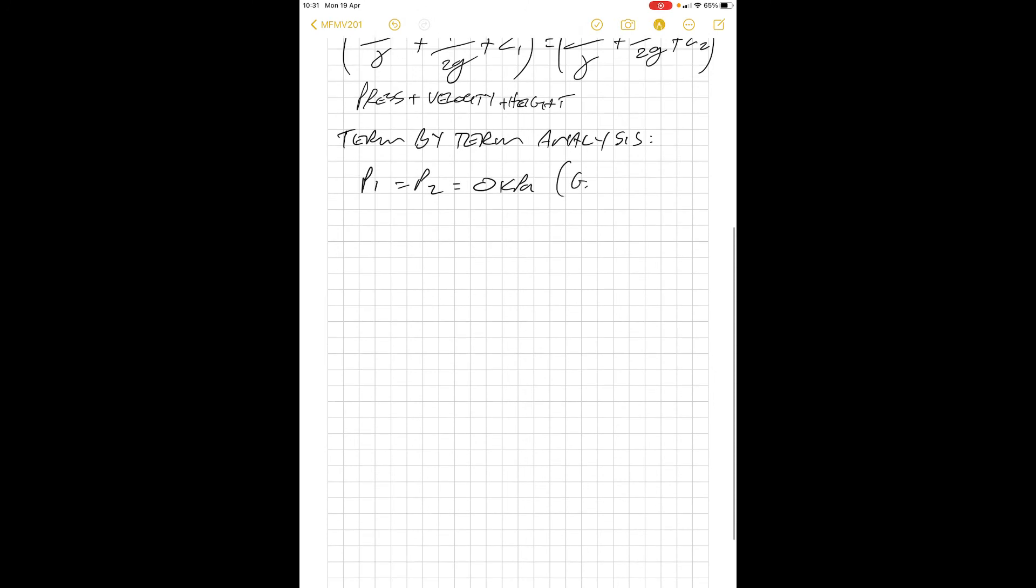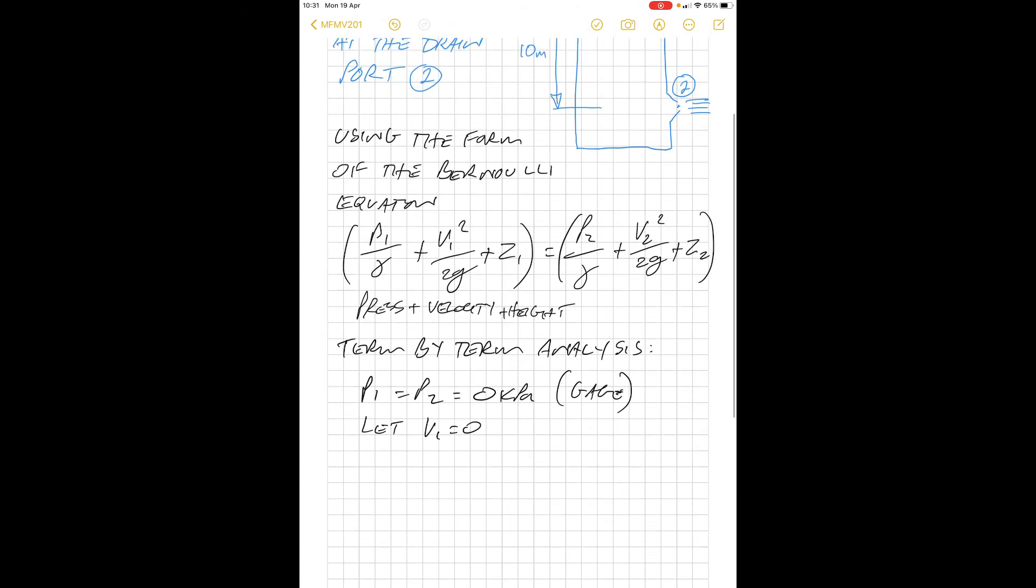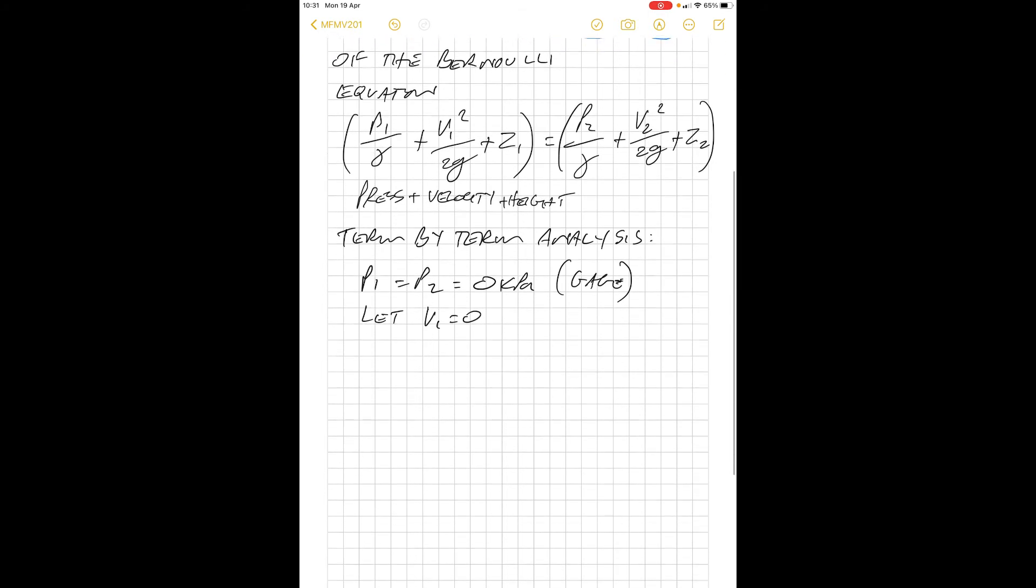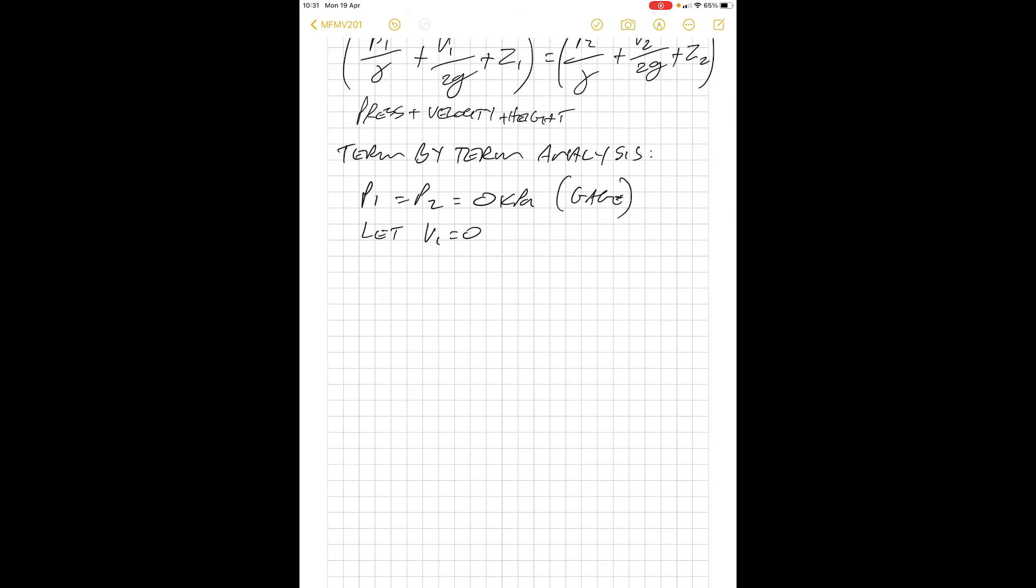Let v1 equal zero. The size of the tank is very large compared to the diameter of the exit, so at point one we can assume it's not moving. Although technically it is lowering very slowly, at this instant we can assume it is zero because that velocity is very small.